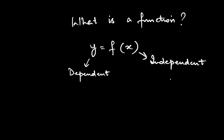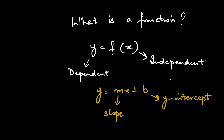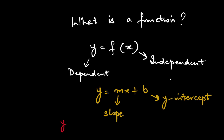Let us assume one equation for a line: y = mx + b. In this equation, m is the slope and b is the y-intercept. To make it easier, let us add numbers to the equation. So we write this as y = 2x + 3. Here, the b term would be 3 and the m term would be 2.